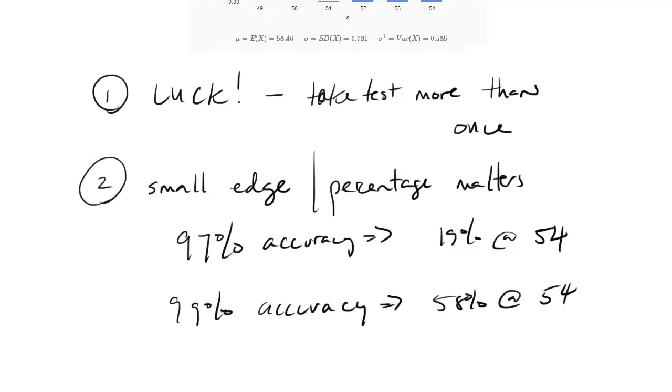that leads you to a 58% chance at a 54. So notice this is a three times difference for a 2% increase in your accuracy. So if your accuracy goes up just a small bit from 97 to 99, you have tripled your chances at a 54. This is the small edge in action.